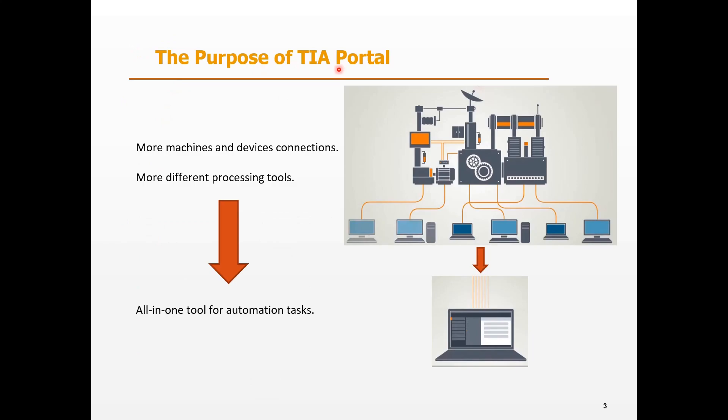The TIA Portal is an integrated design tool for automation industry. In the industrial field, there are more and more machines and devices connected with each other. Also, the operational process becomes much more complex. Therefore, the increasing number of processing tools can be a problem of engineering. For this, Siemens provides an all-in-one tool called TIA Portal. With TIA Portal, we can deal with all the automation tasks.